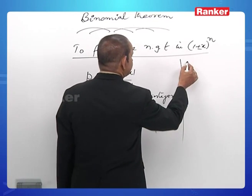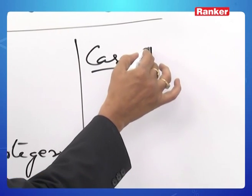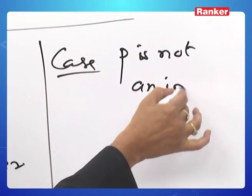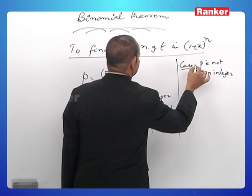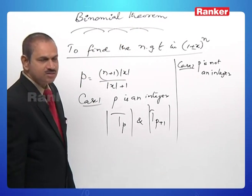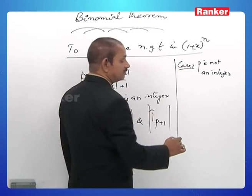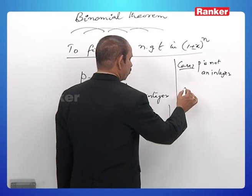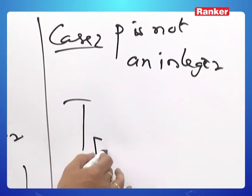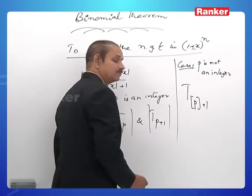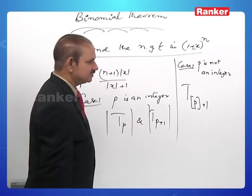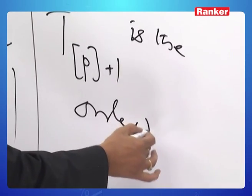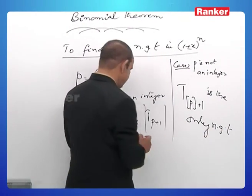Case 2: p is not an integer. What happens in this case? If p is not an integer, then automatically the integral part of p is an integer. In this case, there is only one numerically greatest term, namely T_(⌊p⌋+1) — that is, T of the integral part of p plus 1 — is the only NGT, the only numerically greatest term.